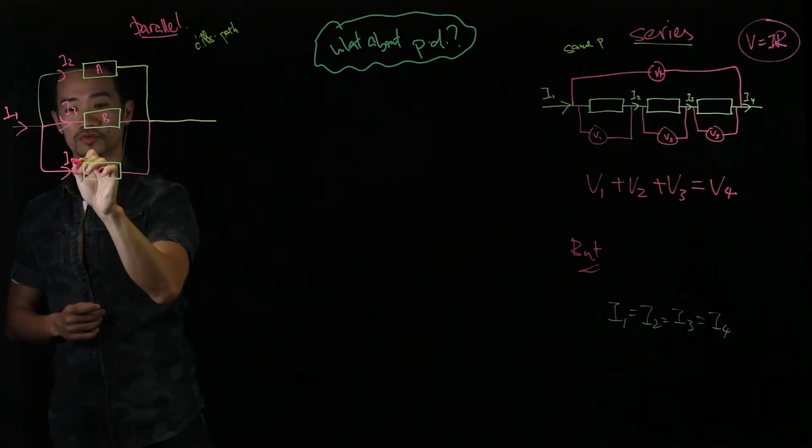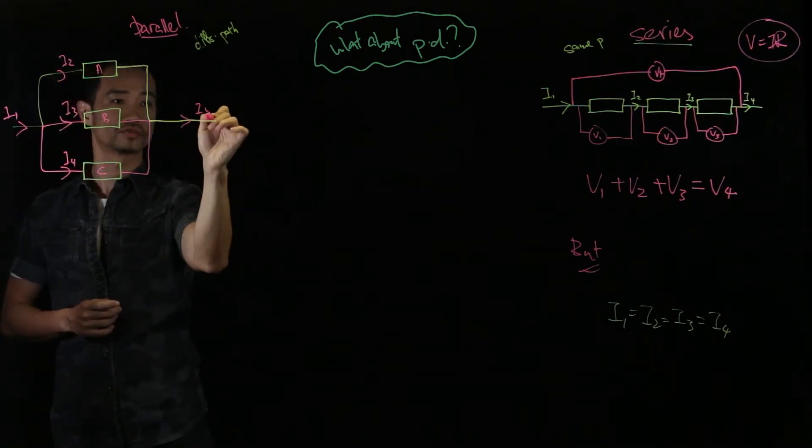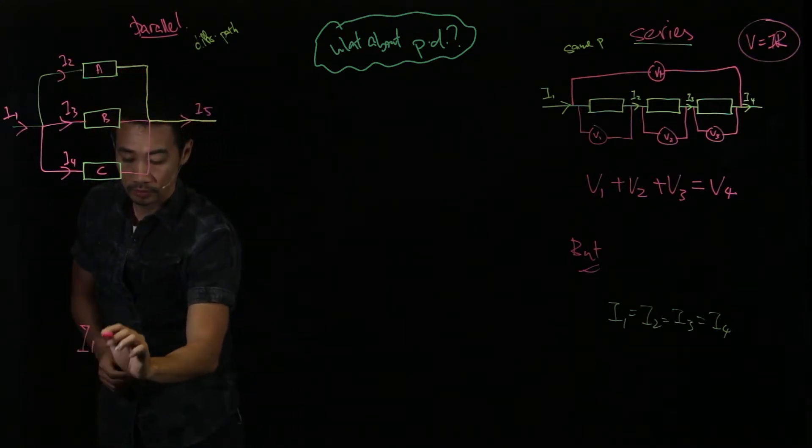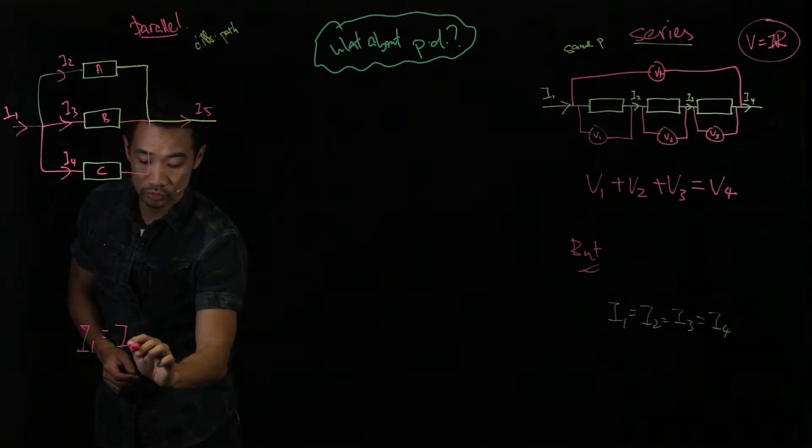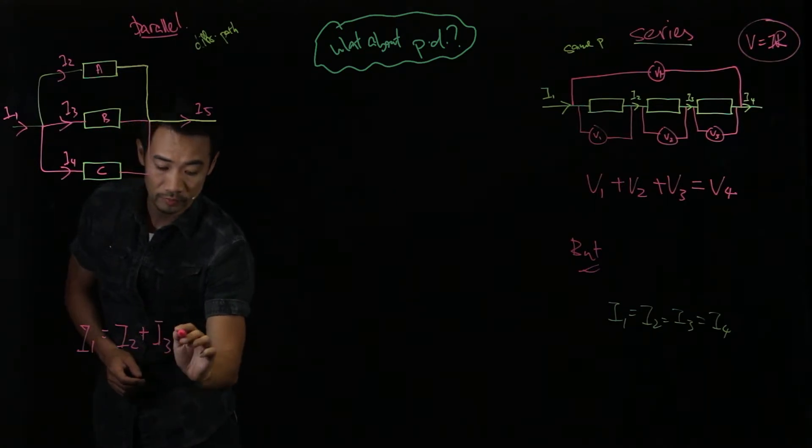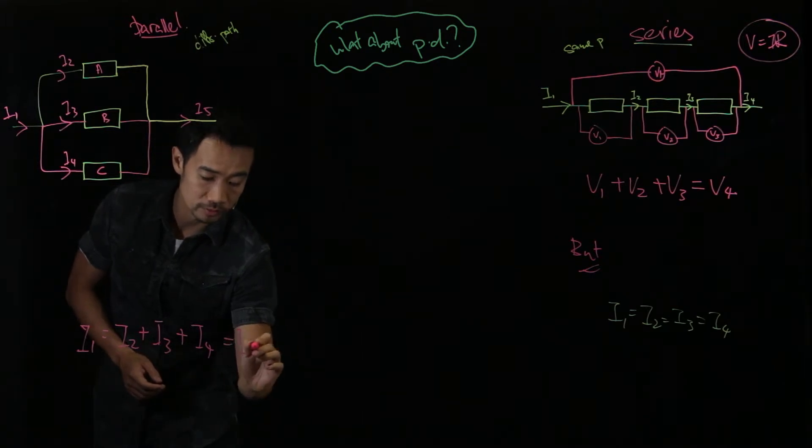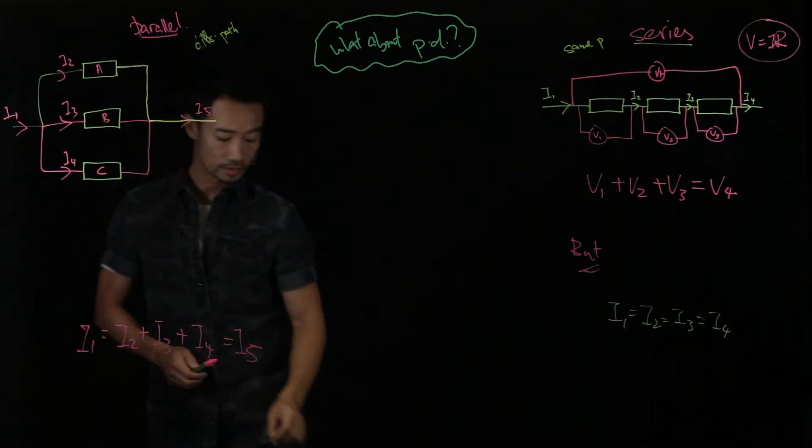I2, I3 and I4. It's I5. So we learned the last time that I1 is equals to I2 plus I3 plus I4, and all of them comes out to be the same as I5.